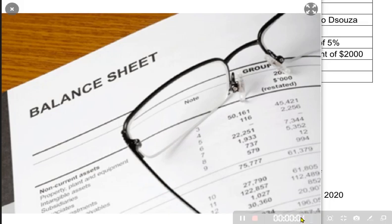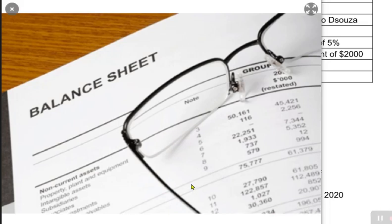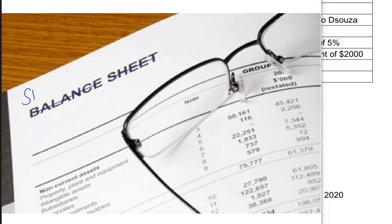Once we are done with preparing an income statement, the last thing we need to do to finalize our accounts is prepare a balance sheet. The new terminology being used by the examiners is not to write 'balance sheet' but instead to write 'statement of financial position.'